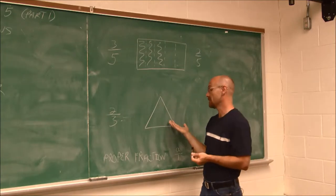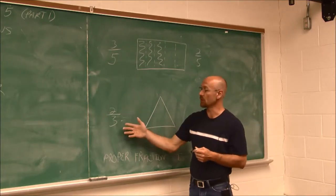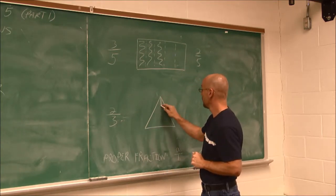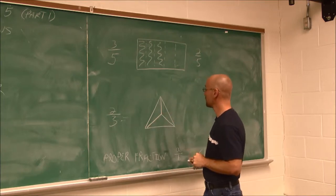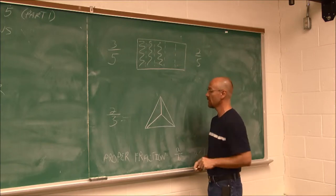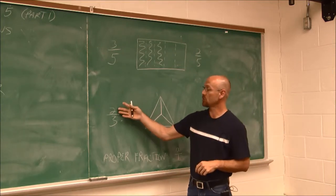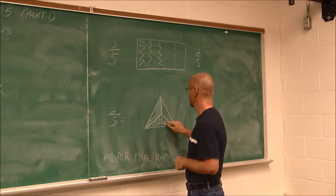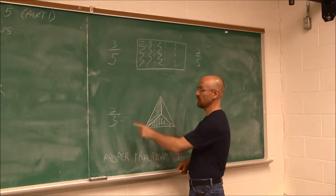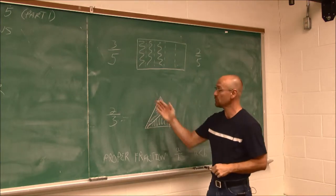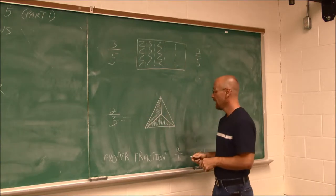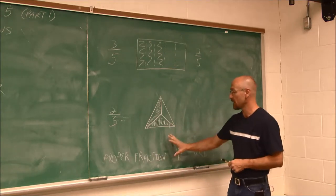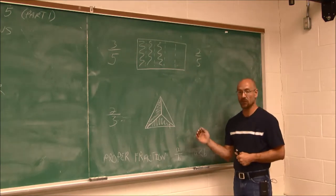If we look at this rectangle, we have 3 fifths of this rectangle that are shaded in. We have 2 fifths that are not. So we've divided it by five, and then we say, how many of that five? Three per five, or in this case, two per five if we look at the unshaded region. What if we have something else? Let's take a look at this triangle here, 2 thirds. That means I would have to divide by three.